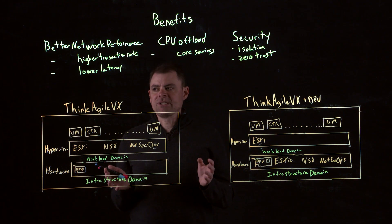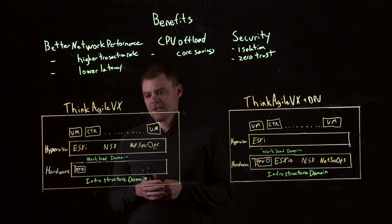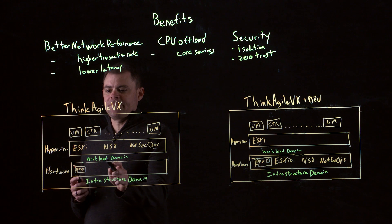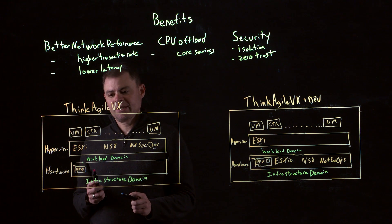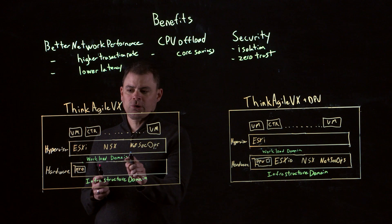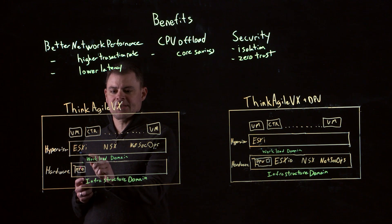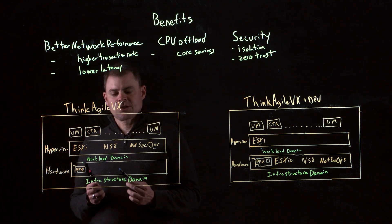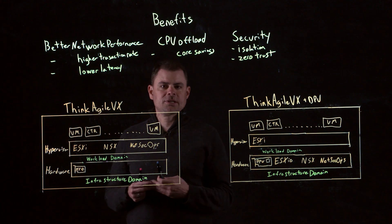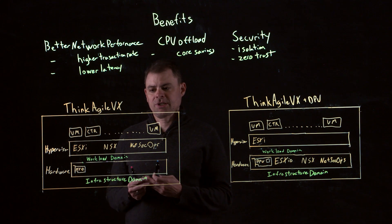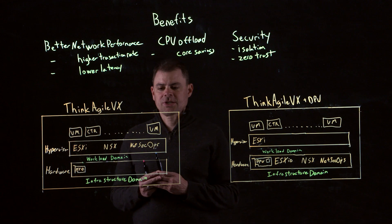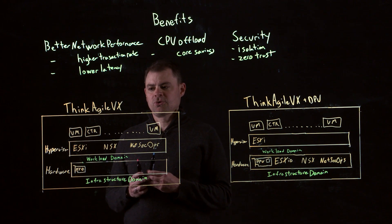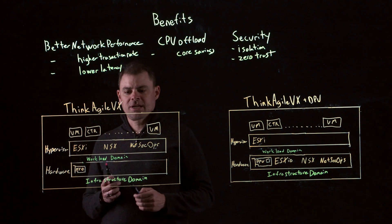Let's dive a little bit deeper into what this looks like. In a more traditional approach, you're going to have your network card on the infrastructure domain, and then on your workload domain or the hypervisor layer, you're going to be running ESXi, NSX, and your network security operations. NSX provides lots of great functionality, such as load balancing, network security, virtual networking, etc. But it does come at a cost in that it leverages the CPU, potentially taking away some of those CPU cores from your other workloads, such as VMs, containers, etc.